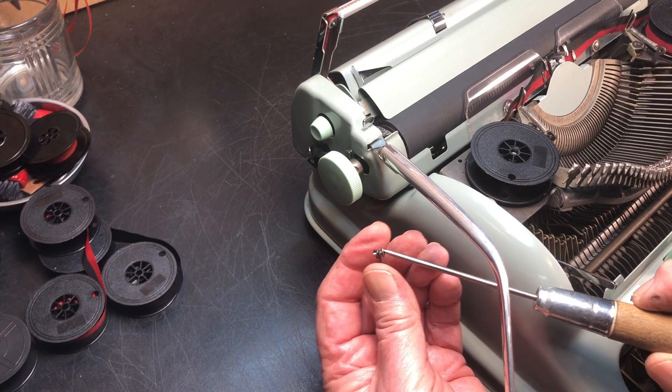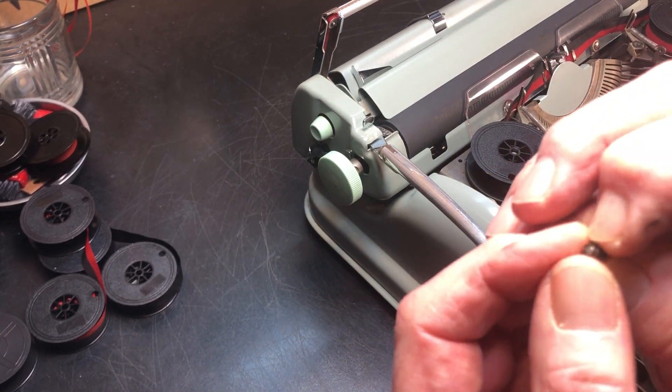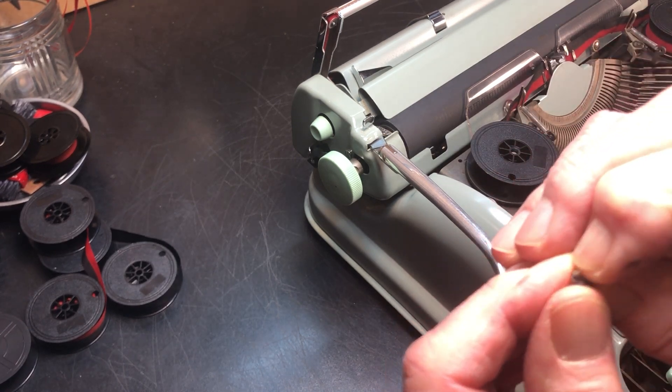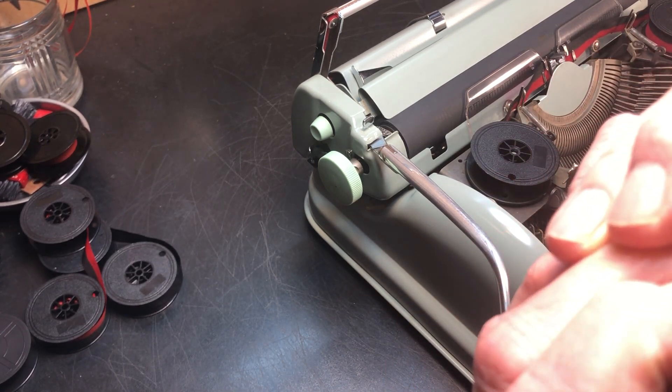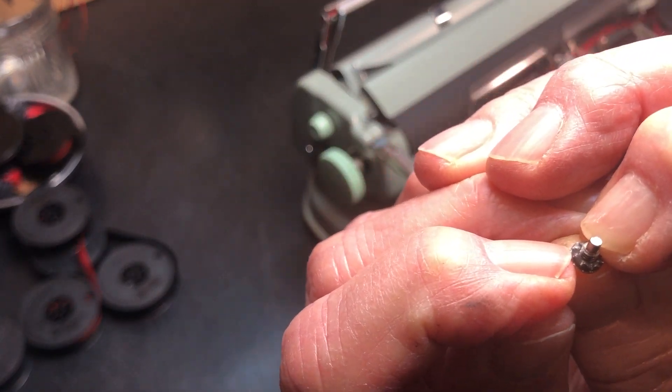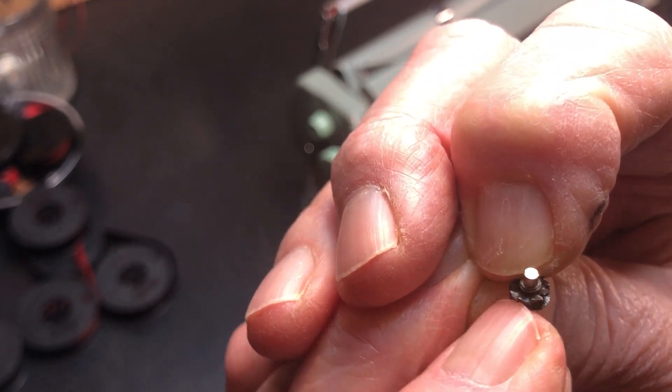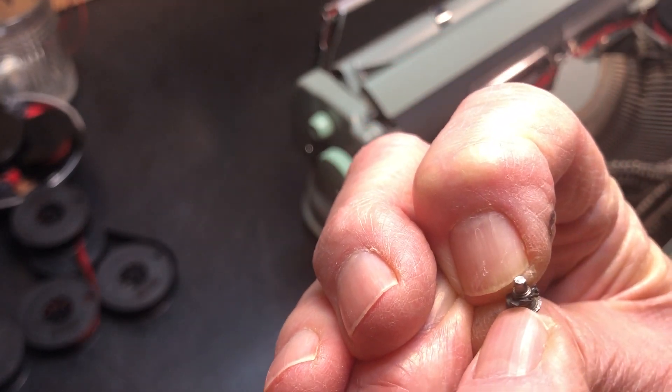This is a special screw. I don't know if you can see this. It has a nub on the end of it that is not threaded. I don't know if we can see this properly, but it is not threaded.